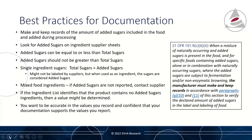In the CFR, there is a requirement to make and keep records of the amount of sugars included in foods. This is a human determination — there's no test run to determine added sugars versus total sugars, so we have to document very carefully. This includes documenting the sugars occurring in the content of the food, as well as any added sugars contributed as a result of processing. We want to look for added sugars on ingredient supplier sheets and report those correctly. Added sugars can be equal to or less than total sugars, but reporting added sugars greater than total sugars would be a red flag indicating incorrect data.